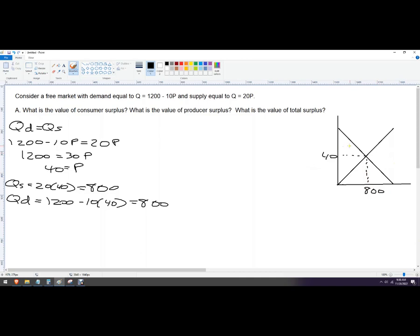So the area here is the consumer surplus. The area here is the producer surplus. I'm going to do this algebraically, though.